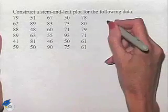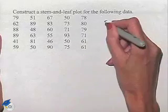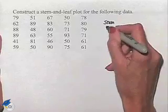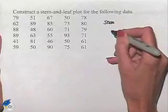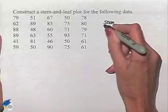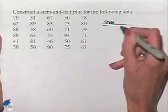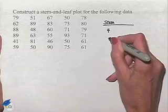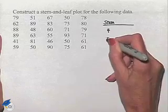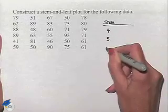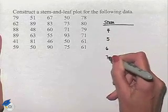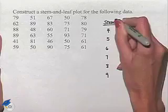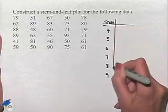So we're going to start off by designating our stem. To do so, we just pick up the first digit. So we're going to have a 4, 5, 6, 7, 8, 9. And let's put a line next to that.